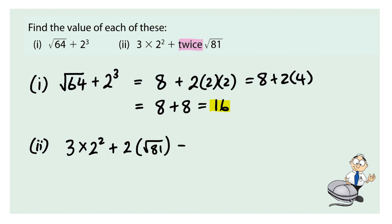We must evaluate the powers before we multiply and multiply before we add. So, 2 squared is 4, so this is 3 groups of 4, plus 2 groups of the square root of 81, which is 9 because 9 nines are 81.